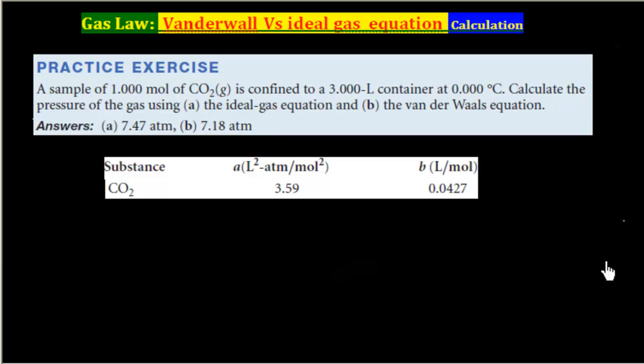Now, this problem is a comparison between Van der Waals equation and ideal gas equation. The question says a sample of 1 mol of CO2 is confined in a 3 liter container at 0 degree centigrade. Calculate the pressure of gas using ideal gas equation and using Van der Waals equation.